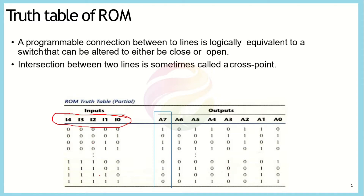These are binary forms representing addresses 0, 1, 2, 3 and similarly the last ones: 32, 31, 30, and 29. For any given location we have 8 bits of storage, so we have written the 8 bits representing the data stored at each memory location. For the first row the data is 10110110, and for the second location the data is 00011101, and so on for all 32 locations.